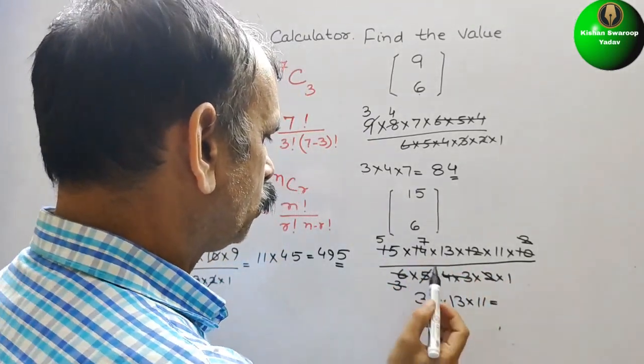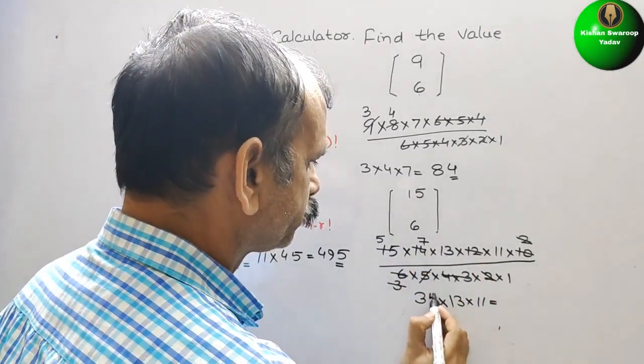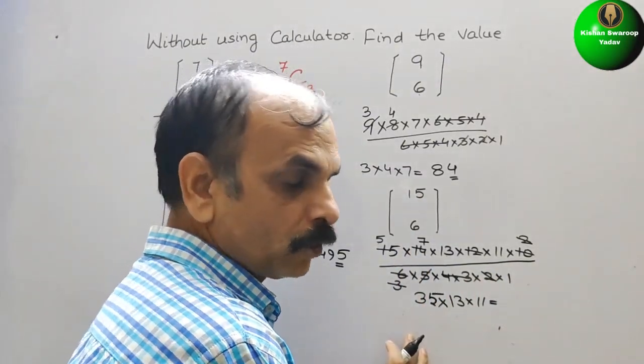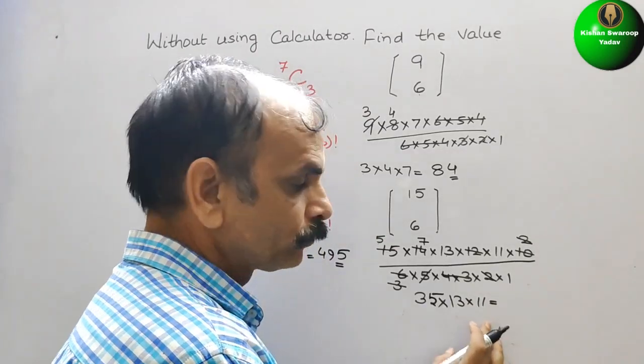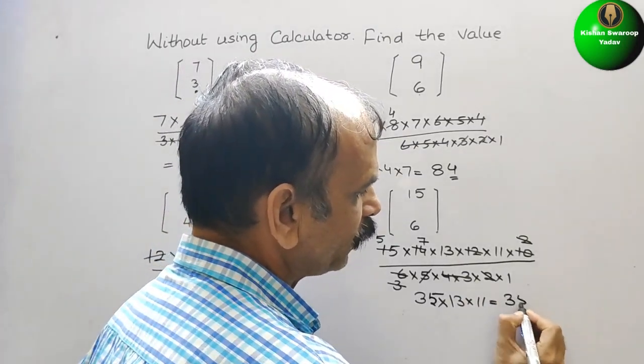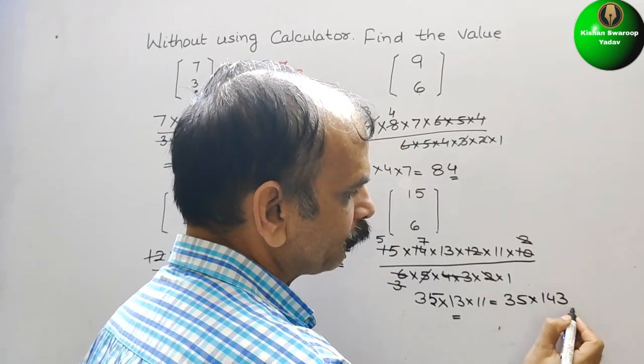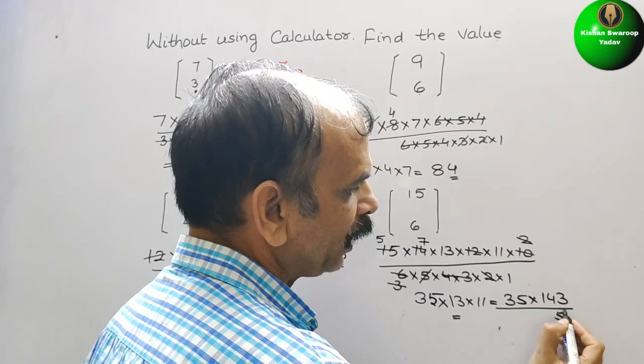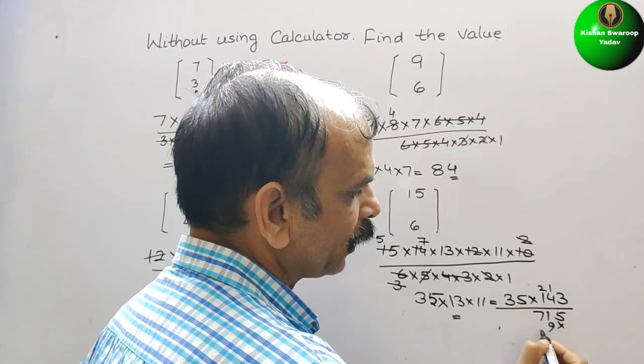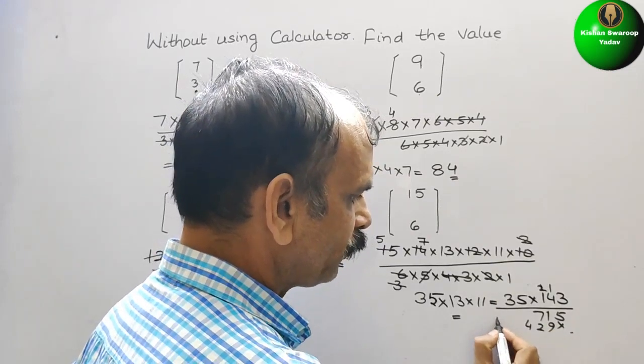That is equal to, we can say now, yeah. No, 5 into 7 is 35. I thought it is 6. So 35. So now just we will multiply it. So 13 into 11 is 143. So 35 into 143. So now multiply them. 5, 3 is 15, 1 carry 20, 21, 2 carry and 7. 3, 9, 12 and 4.